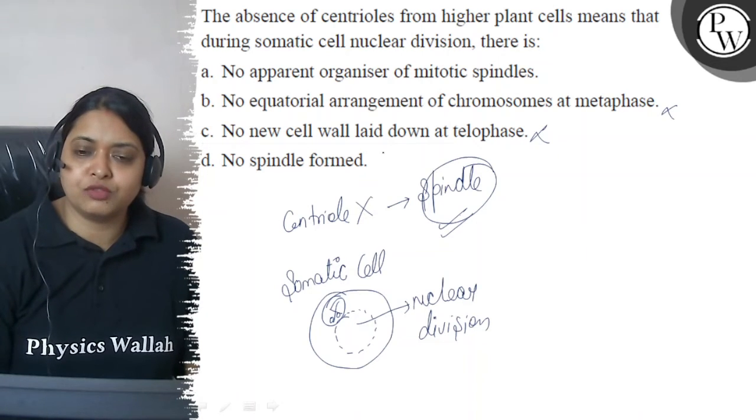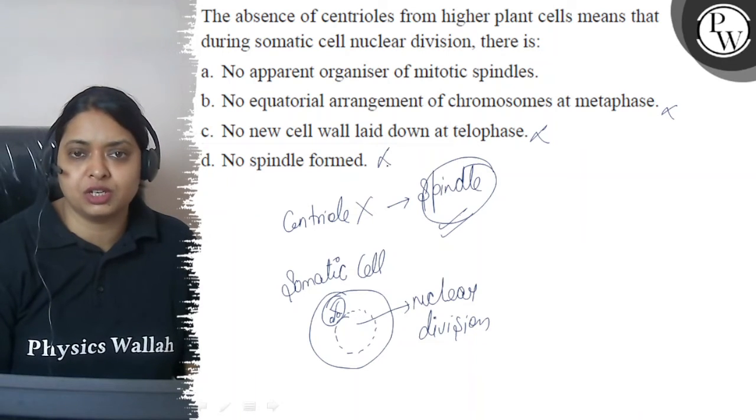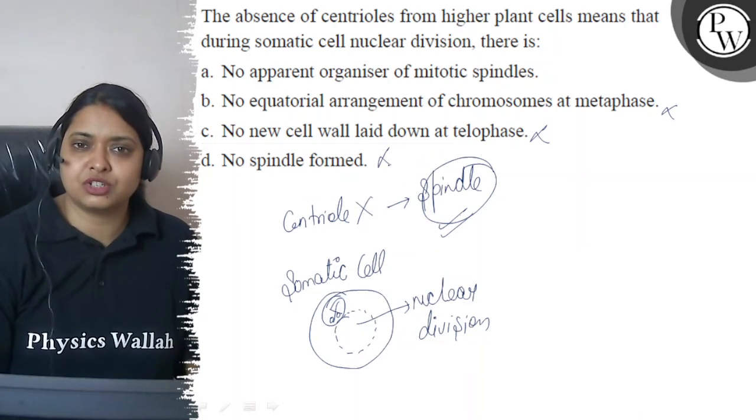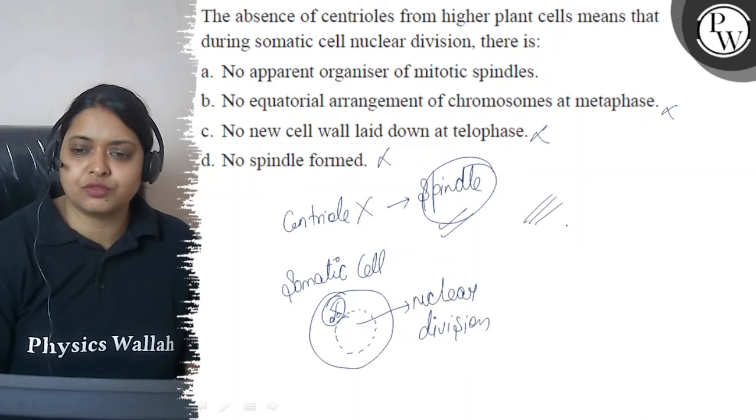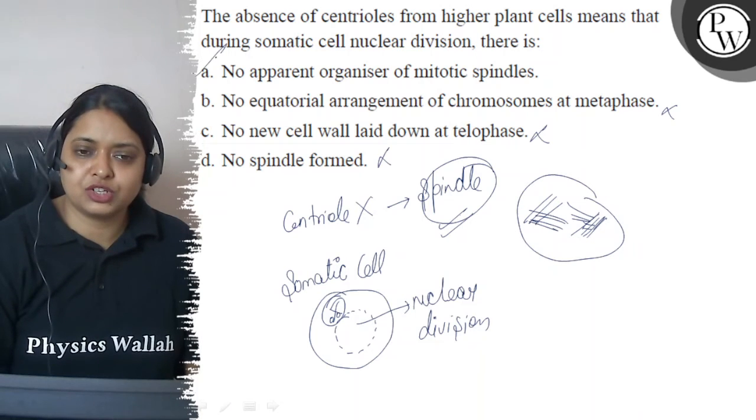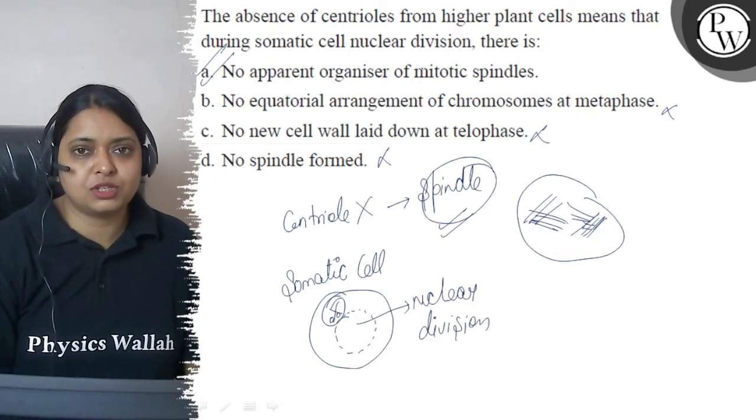D option: No spindle formed. It will not be like this, because spindle is formed. So the correct answer for this question is your A option. That is no apparent organizer of mitotic spindle. Thank you and best of luck.